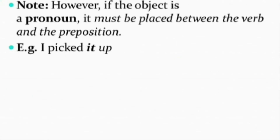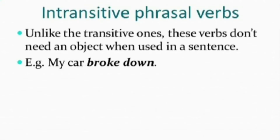Note: if the object is a pronoun, it must be placed between the verb and the preposition — for example, 'I picked it up.' Intransitive phrasal verbs, unlike transitive ones, do not have an object. Keep this in mind — for example, 'My car broke down' — there is no object added here.